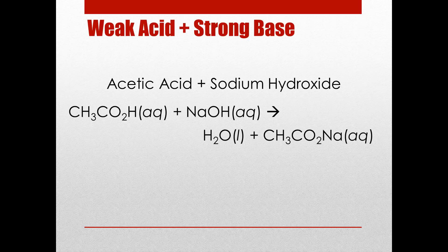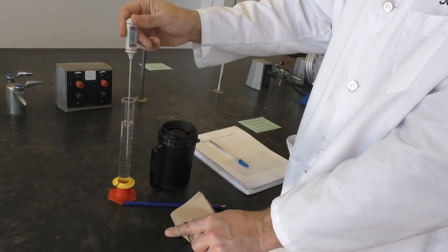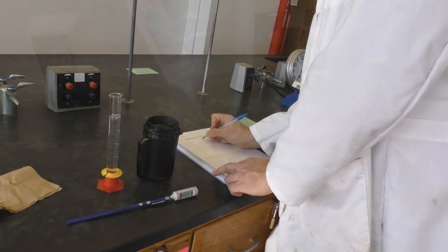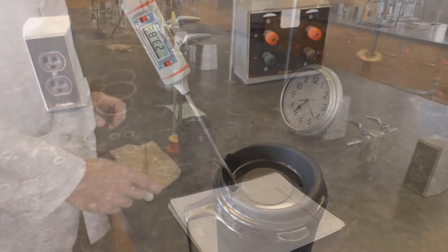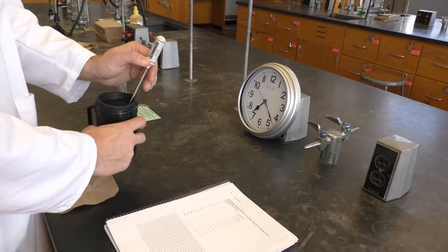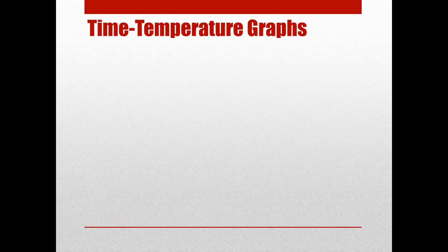Again, to measure the heat of this reaction, all you'll need to do is mix the two solutions in your calorimeter and monitor their heat by taking the temperature. Just like before, add 50 mL of NaOH to your calorimeter, rinse your grad cylinder, then measure out 50 mL of acetic acid. Let the two solutions come to the same temperature, then add the acetic acid to your calorimeter, cover, swirl, and record the temperature every 15 seconds for 3 minutes.